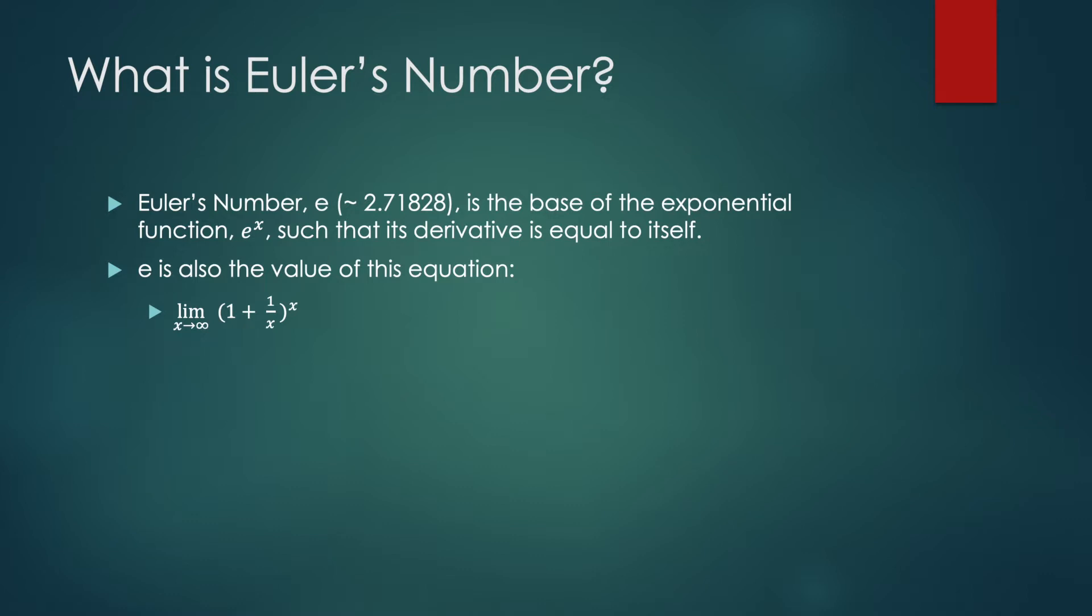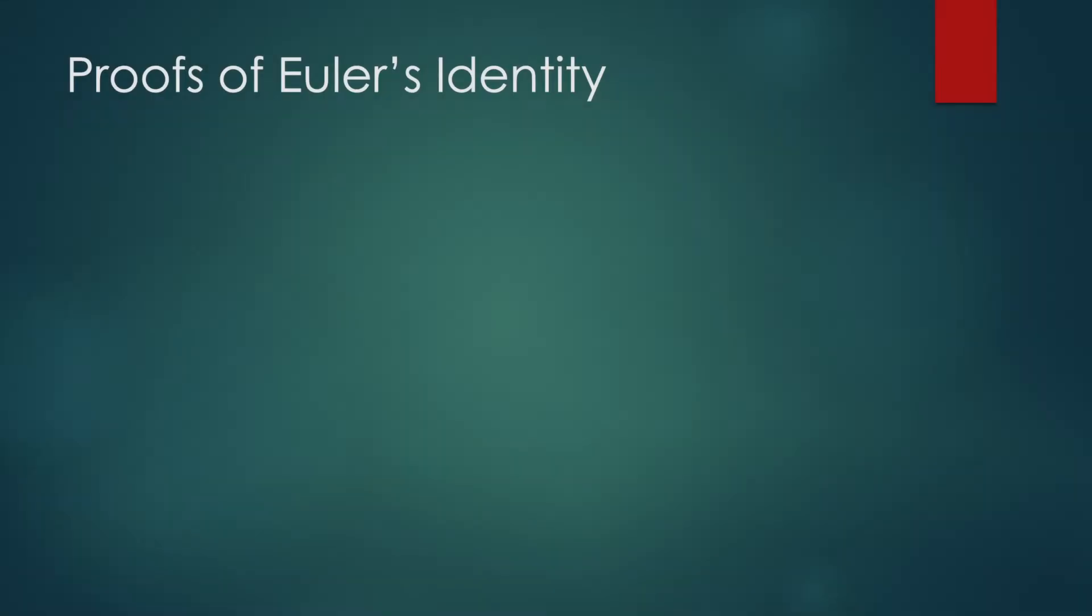There are two proofs I ran into pretty frequently online when I was researching Euler's identity, both showing that e to the IX is equal to cos X plus i sin X. This equation then evaluated for X equals π gives us Euler's identity.